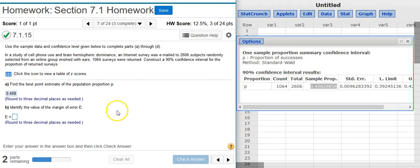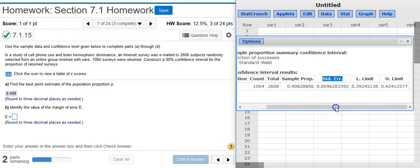Part B asks us for the margin of error. Now some of you may be tempted to take this next number here and just use this, but that's not the margin of error. That's a value called the standard error, which is calculated a little differently. So this number that you see here is going to be incorrect.